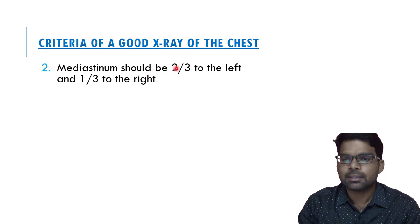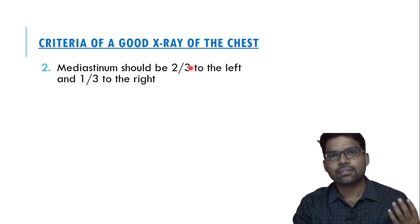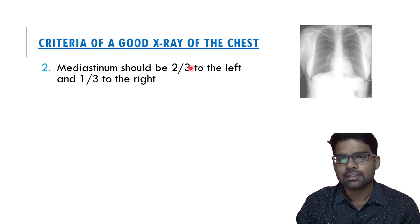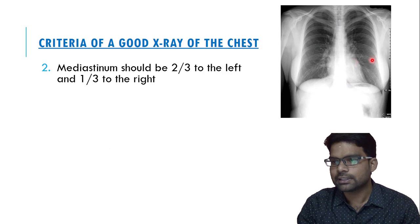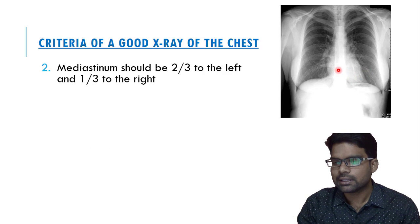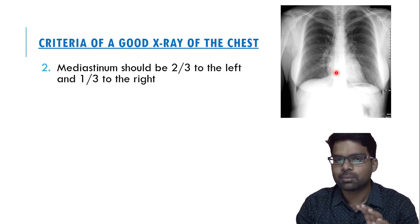The second point: the mediastinum should be two-thirds to the left and one-third to the right. In this normal chest X-ray PA film, if you look at the mediastinum, two-thirds is to the left and one-third is to the right, which confirms it is a normal and good X-ray projection.